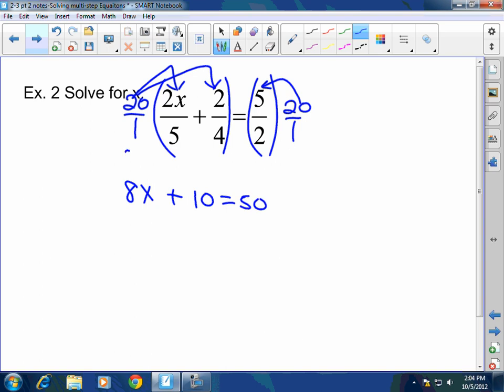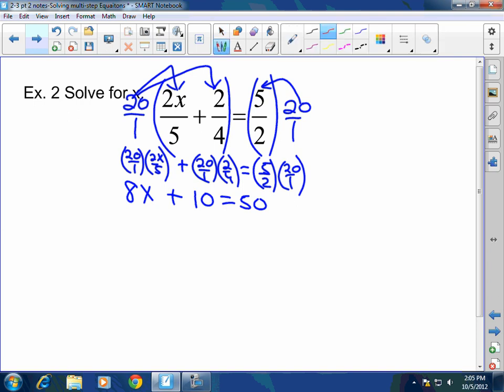Now again, how did I get that? It's 20 over 1 times 2x over 5 plus 20 over 1 times 2 fourths equals 5 over 2 times 20 over 1. Okay? 5 goes into 5 one time. 5 goes into 20 four times. 4 times 2x is 8x. Boom. 4 goes into 4 one time. 4 goes into 20 five times. 5 times 2 is 10. Boom. 2 goes into 2 one time. 2 goes into 20 10 times. 5 times 10 is 50. Boom. Does that make sense?